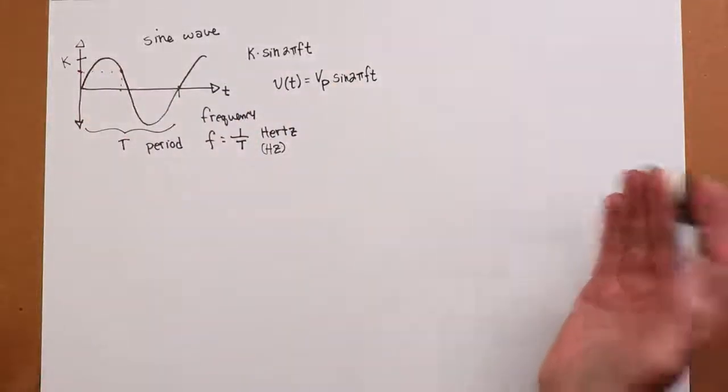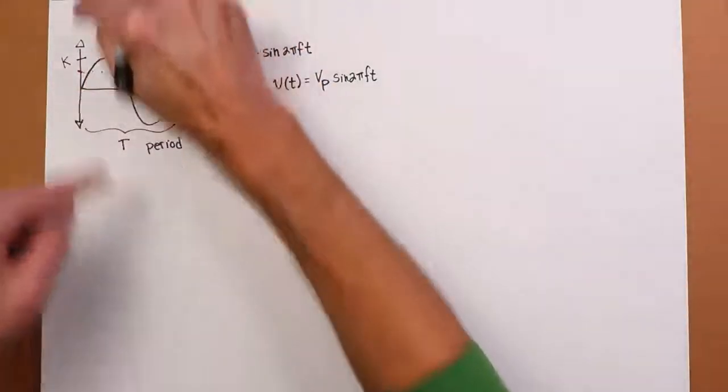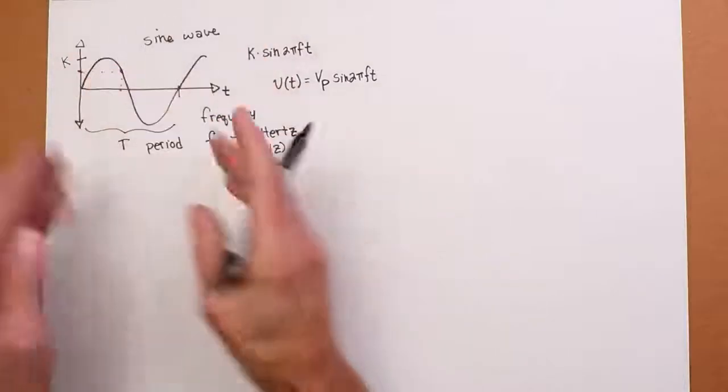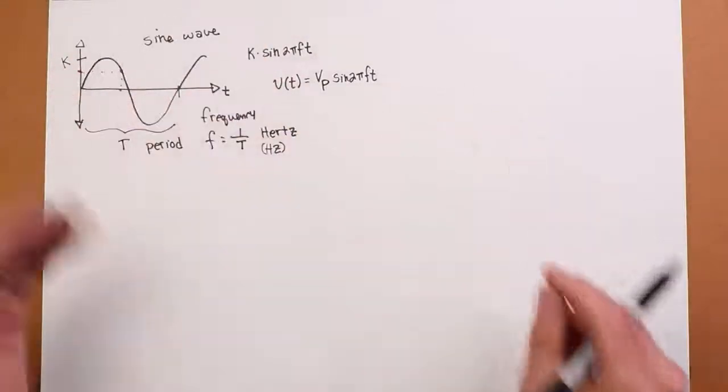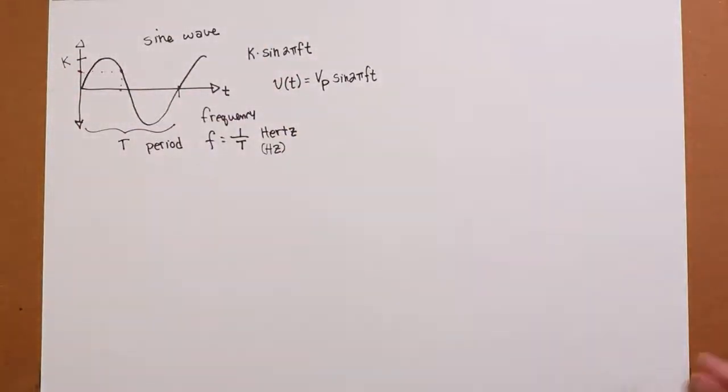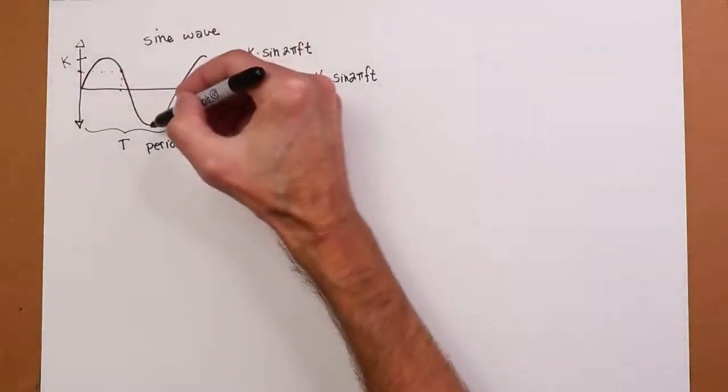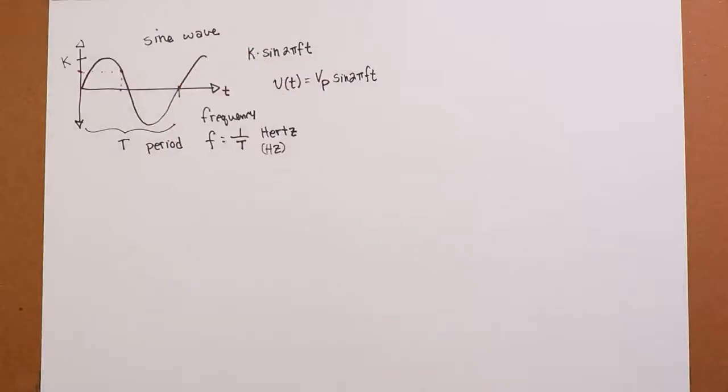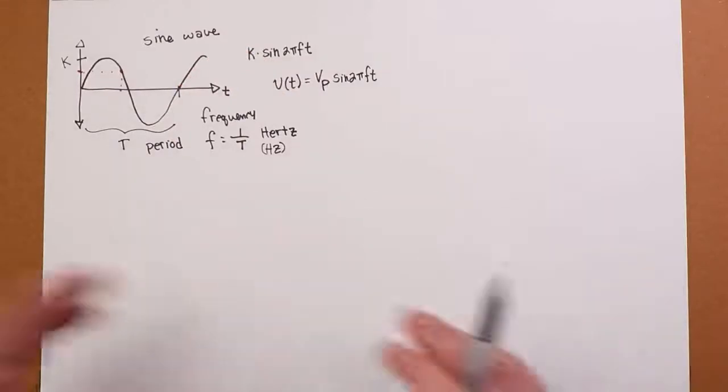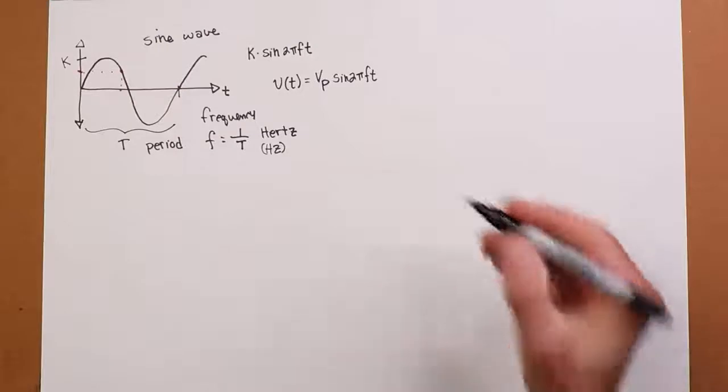Really, the only variations are just how tall this is, what's the peak value, and just how quick it is, how many cycles I get in a second. In lab, sometimes we refer to a peak-to-peak value, in other words, from the positive peak to the negative peak, instead of just talking about the peak.